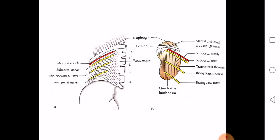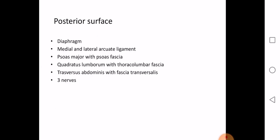The posterior relation is the same for both kidneys: diaphragm, medial and lateral arcuate ligaments, psoas major with psoas fascia, quadratus lumborum with the thoracolumbar fascia, and transversus abdominis with the transversalis fascia. The three nerves are the subcostal nerve, the iliohypogastric nerve, and the ilioinguinal nerve. The kidney is also related to the subcostal vessels.